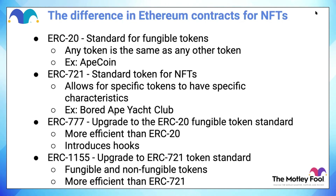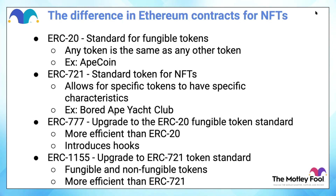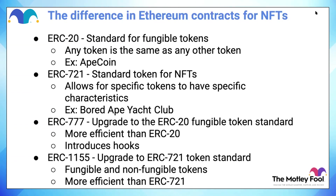ERC-777 is an upgrade to the ERC-20 contract. It introduces hooks — the theory was that this would be a more efficient contract because it allowed for basically one transaction instead of two when tokens are being moved around. But it has obviously not become the contract of choice even for brand new tokens. Sometimes developers build something and it isn't adopted the way you'd think. My understanding is that it's mostly a preference thing — people are used to ERC-20 tokens and so that's what they build with.